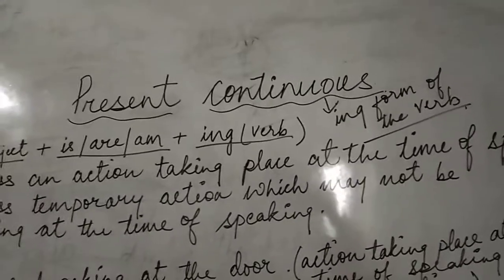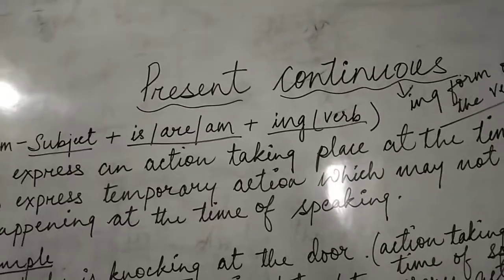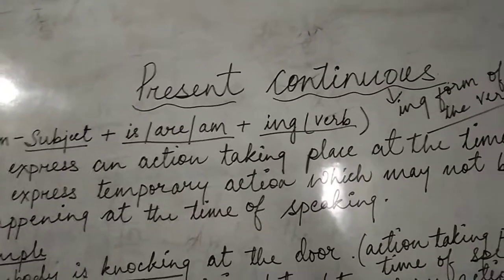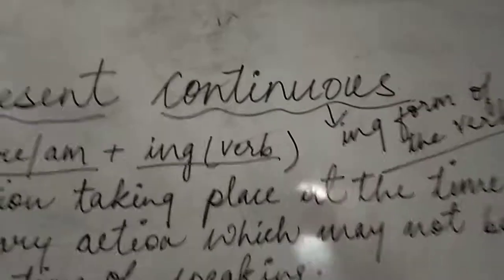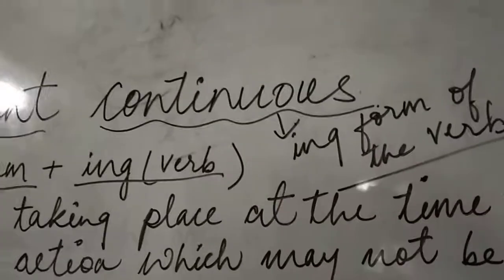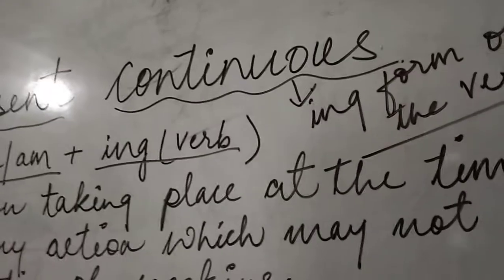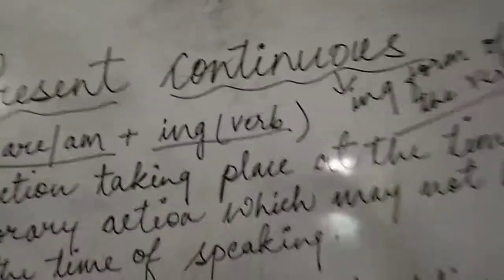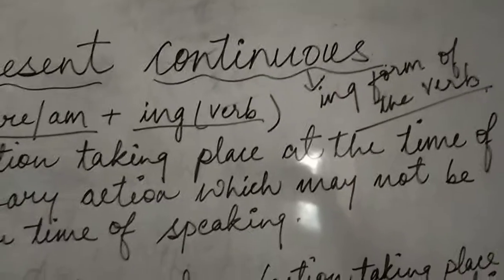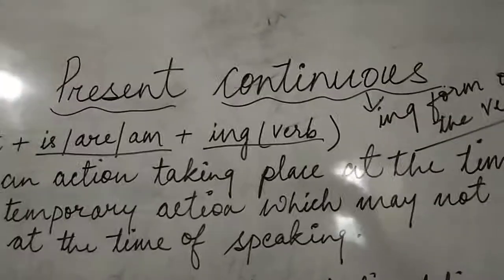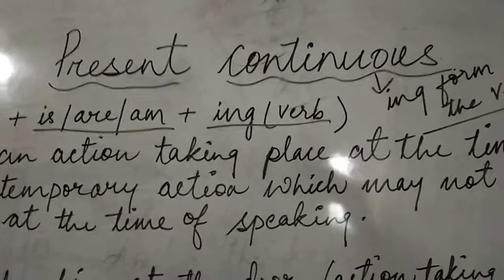What is present continuous? You all know simple present tense. Present continuous means the continuous form — continuous means the ing form of the verb. The work which is in action, which is going on, is called the continuous form. Present means at the time of speaking it is going on in the present.